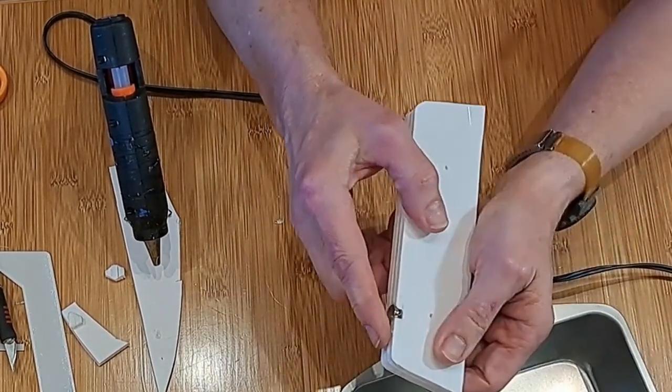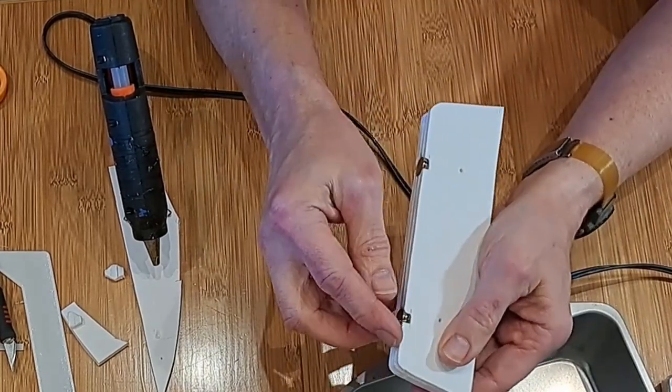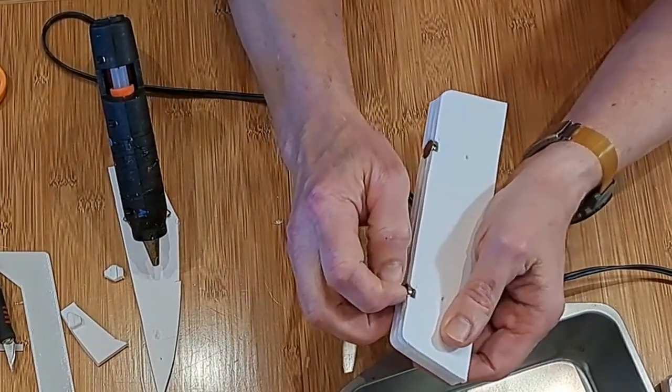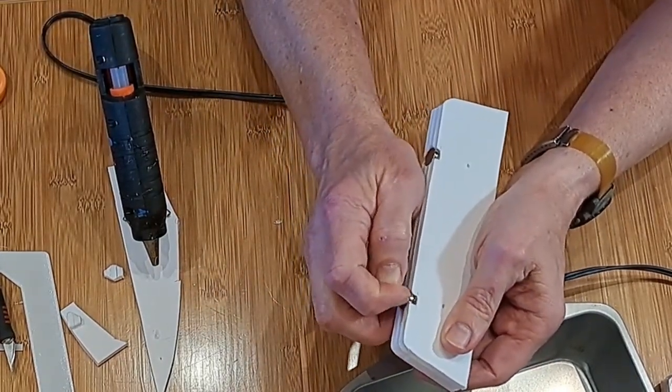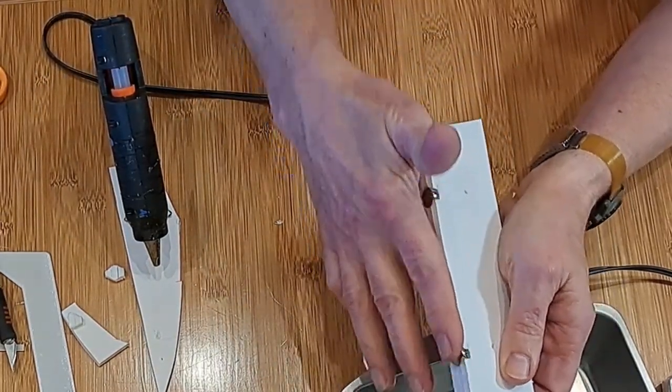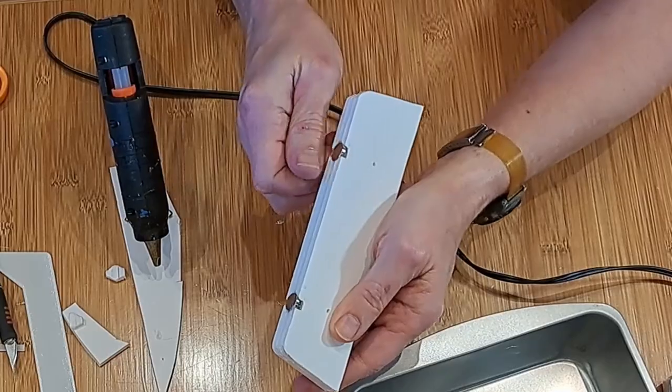I just have them pushed down there till it's flush, and I don't want any extra glue on the bottom so it's smooth. But if I have any on there, I can just take it off with a knife. There we go, so it's nice and smooth along there.